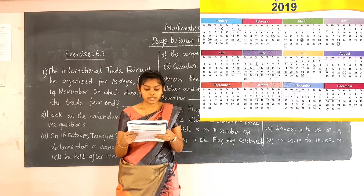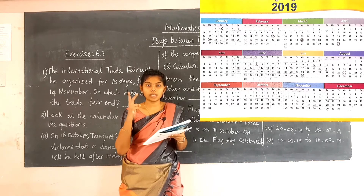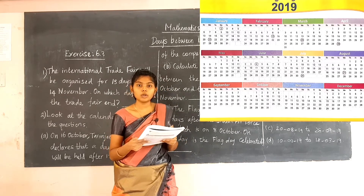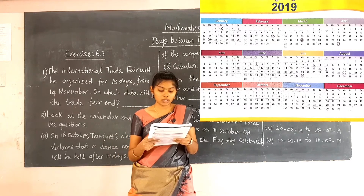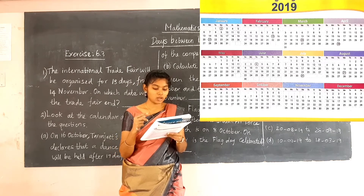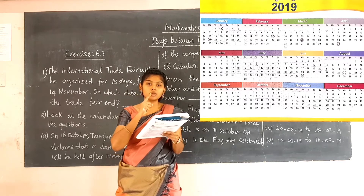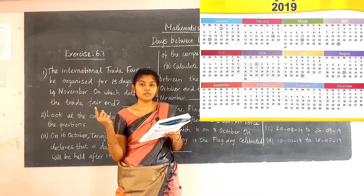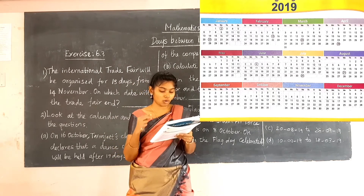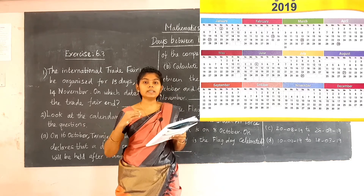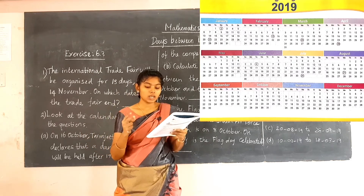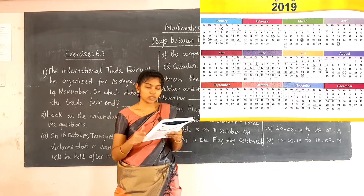Tarunjit's second appointment is on 21 January, and his third appointment is on 15 February. How many days are there between the two appointments? While we are counting the numbers, we have to leave the first day and the last day. While counting the number of days between two dates, we leave the first and the last days — that is the main thing.